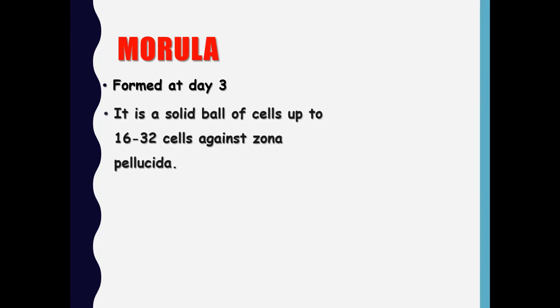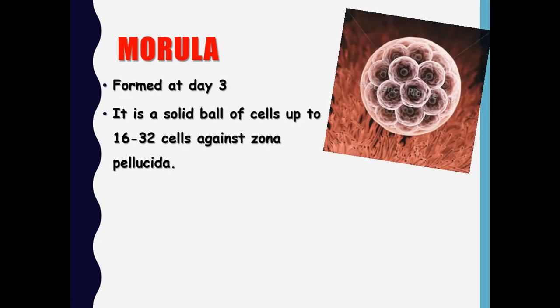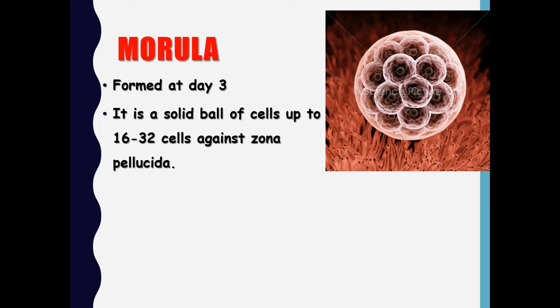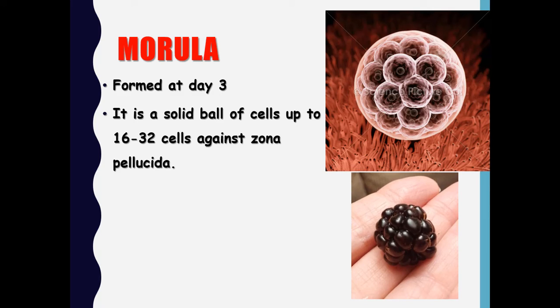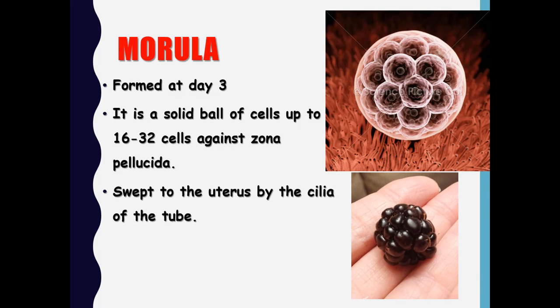The morula stage is formed around day three of development. It is a solid ball of cells of up to 32 cells, all lying within the zona pellucida. It is called morula because it looks like a mulberry. This morula is swept to the uterus by the cilia of the fallopian tube.